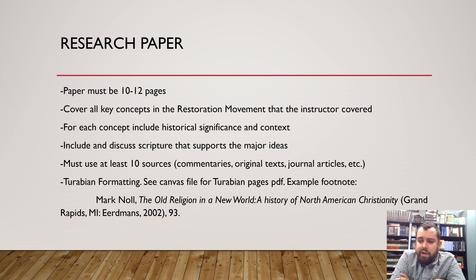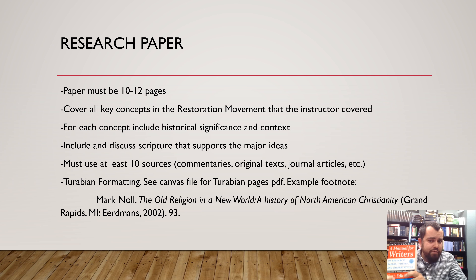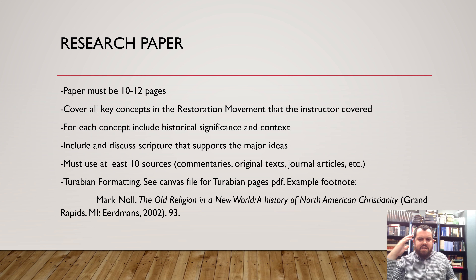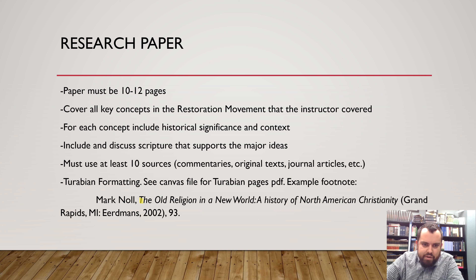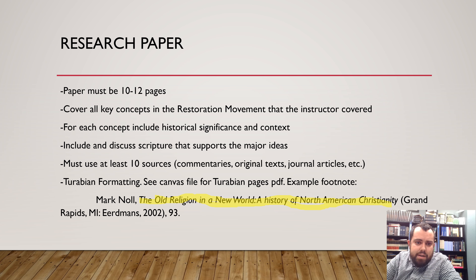The Stone-Campbell Journal might be one of the first places you look for documents on a specific topic. We'll be using Turabian, and I have a PDF of the key pages up on Canvas. In a footnote, for example, you list first and last name, comma, the full title in italics, then in parentheses the city of publication, publisher — such as Eerdmans, 2002 — and then just the page number.